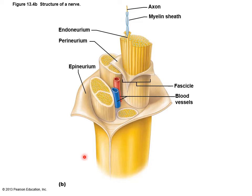This is the organization of a nerve, and it should look familiar because it resembles the organization of a muscle. Instead of endomysium and perimysium, you have endoneurium — each individual axon with a myelin sheath surrounded by this thin connective tissue. Those are bundled together into fascicles surrounded by perineurium, and all the fascicles are bundled together into the nerve and surrounded by a dense connective tissue coating called the epineurium.